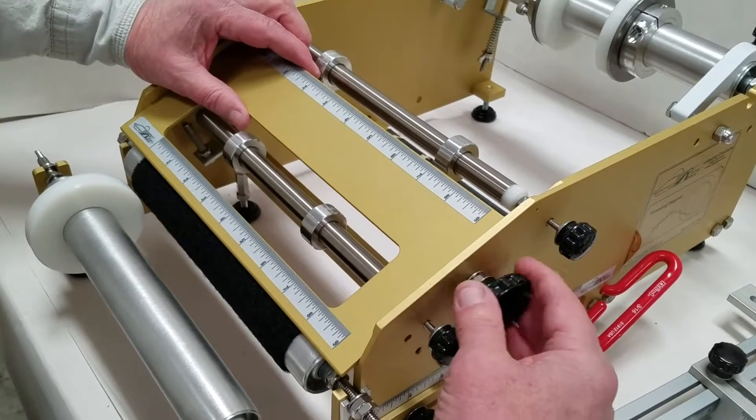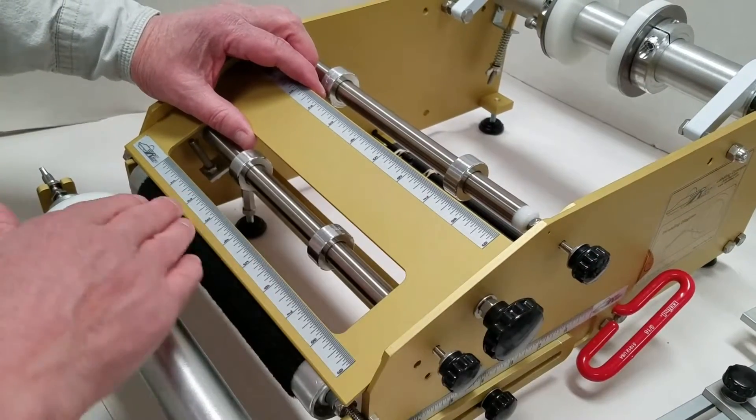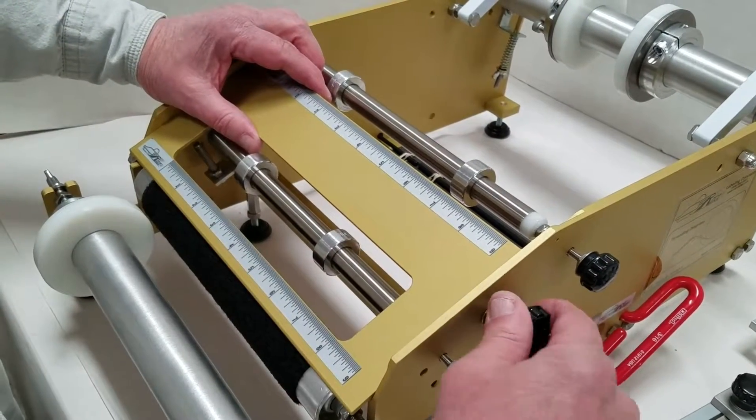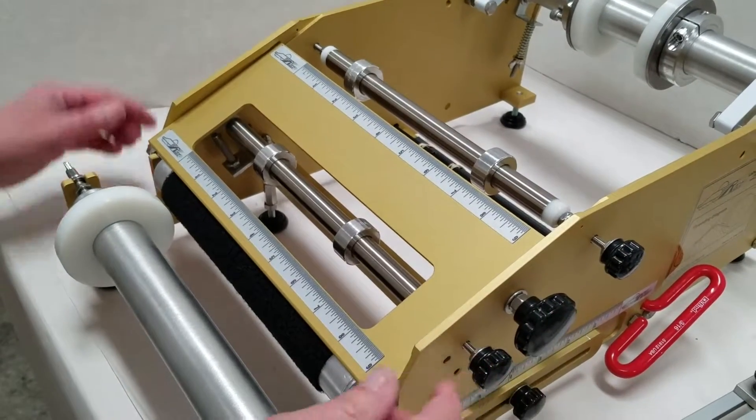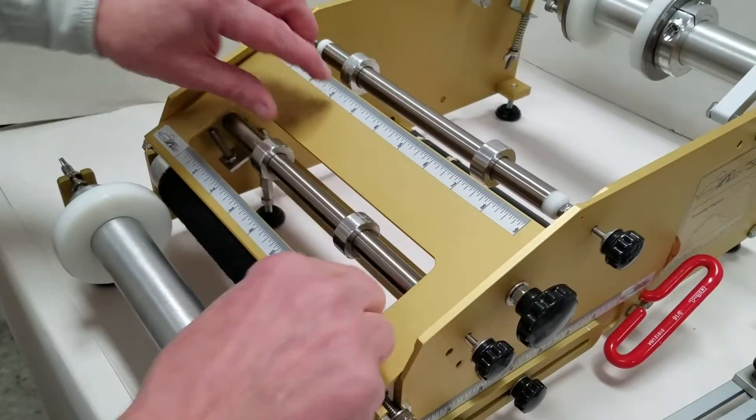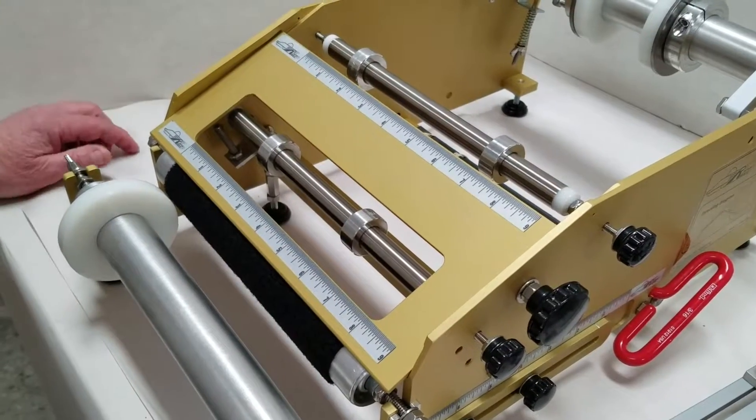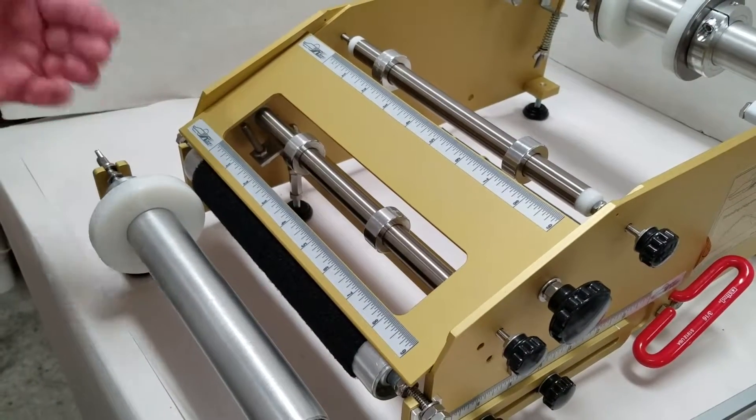And the separator plate just rests lightly on the black roller and you turn the big knob clockwise and that squeezes the frame and locks the separator plate in. Then it's ready to thread.